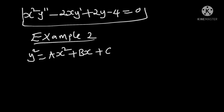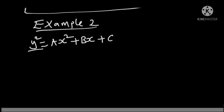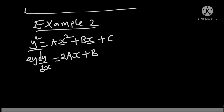However, we have y squared here. From implicit differentiation, whenever we differentiate y squared, we should attach dy over dx. So let's start. When we differentiate y squared, we get 2y, and we need to attach dy over dx. When we differentiate x squared, we get 2x times a, which becomes 2ax. When we differentiate x, we get 1; 1 times b is b. c is a constant, so its derivative is always 0.